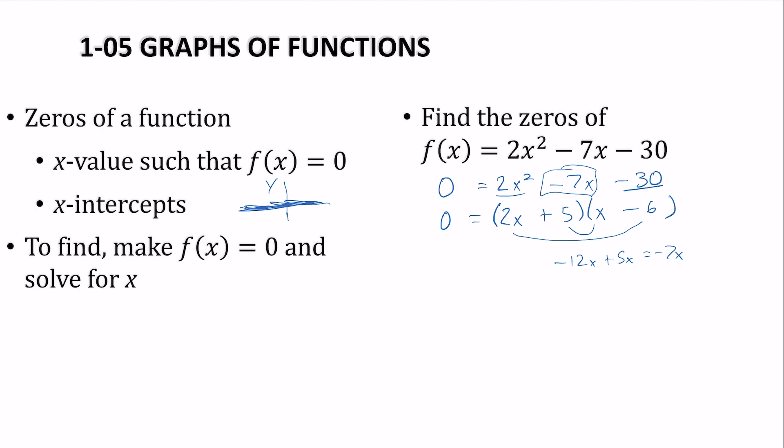All right, so I factored. So now we're going to take each factor equal to zero and solve for x. Subtract 5, divide by 2. Or just add 6. So this one has two zeros. Negative 5 over 2 and 6.